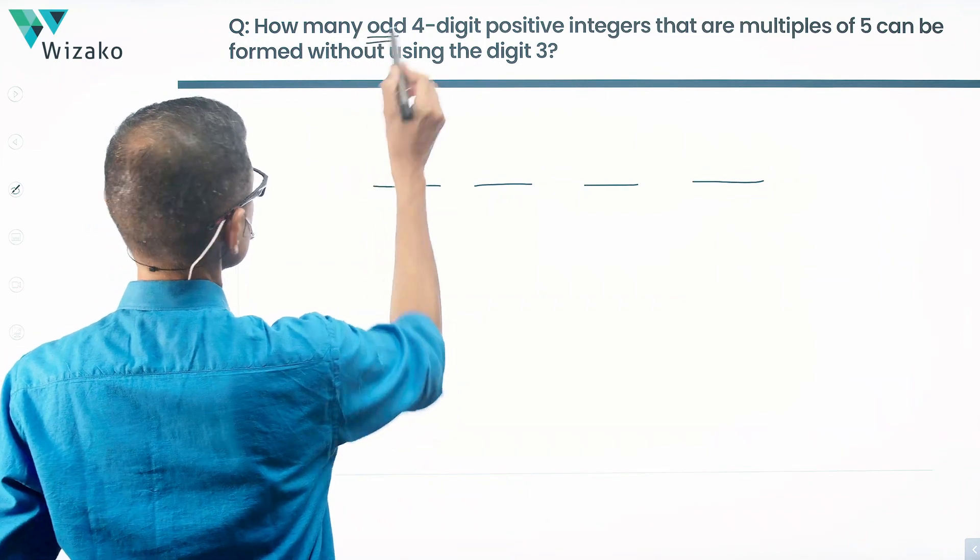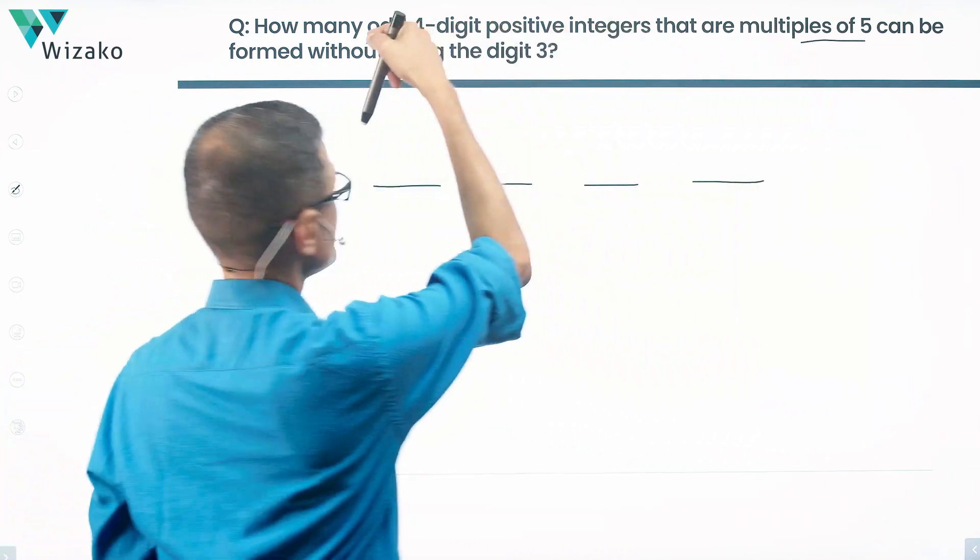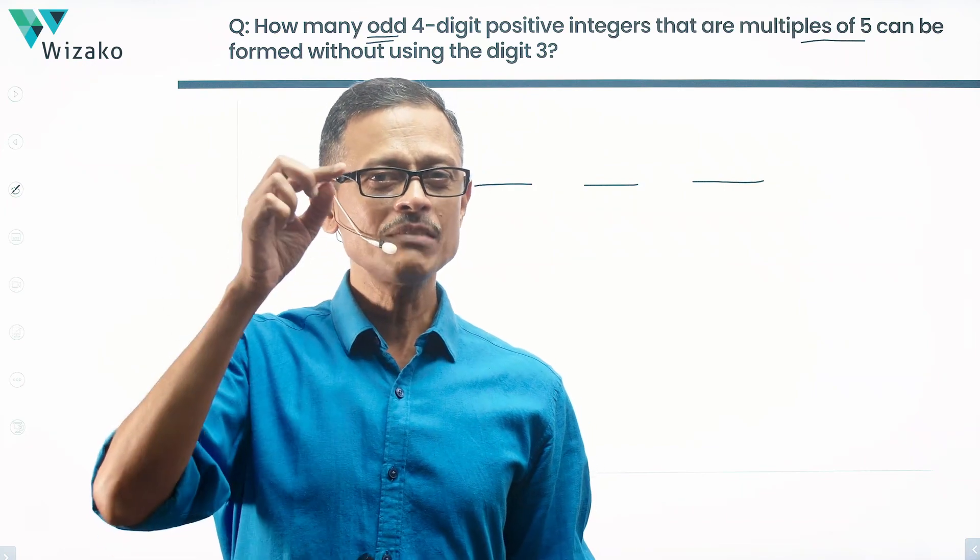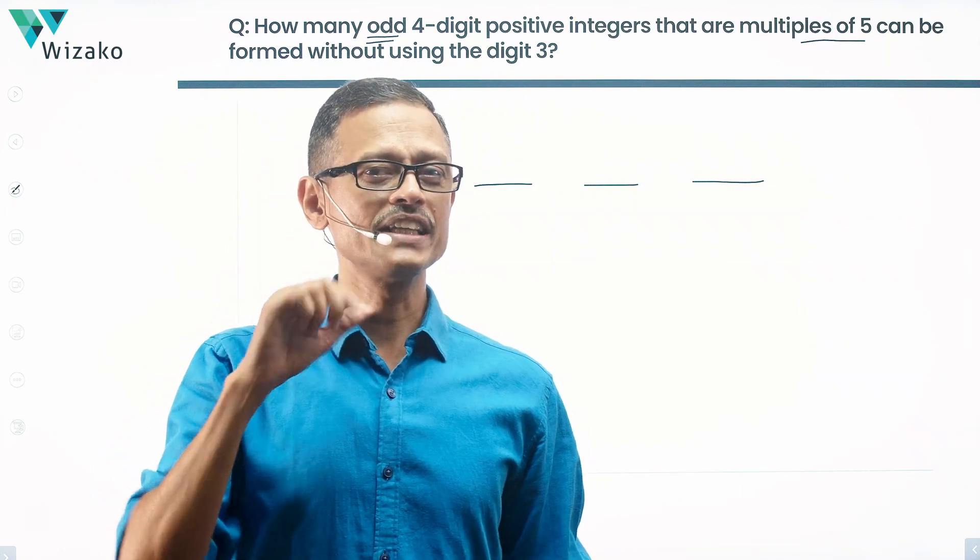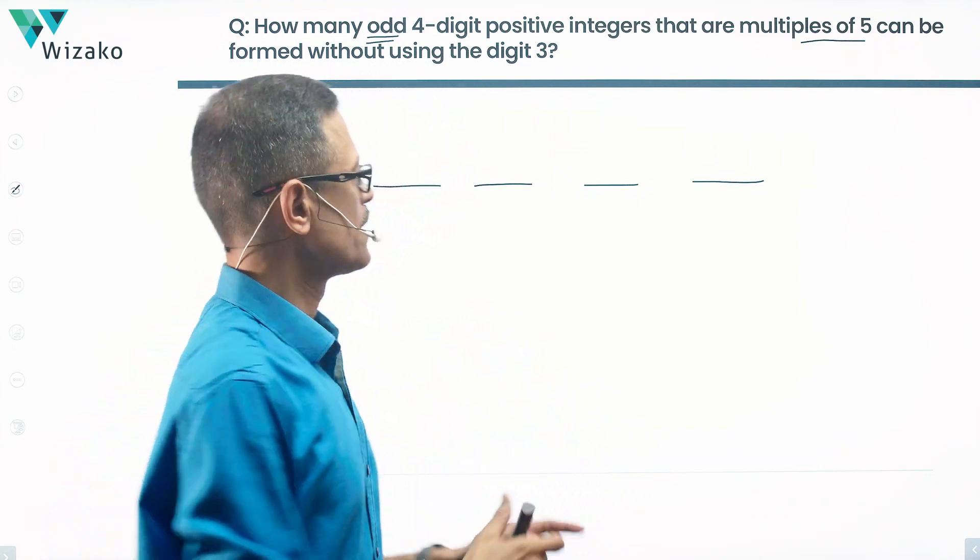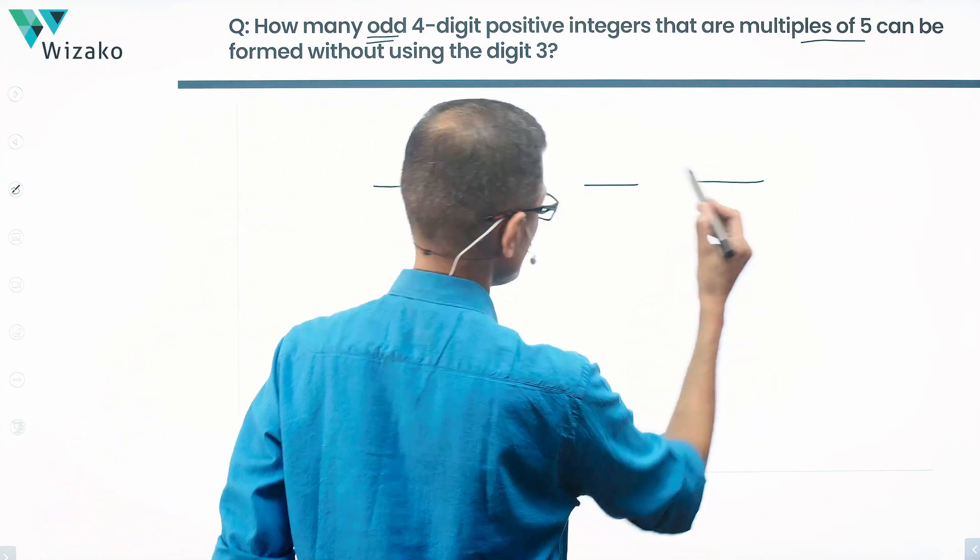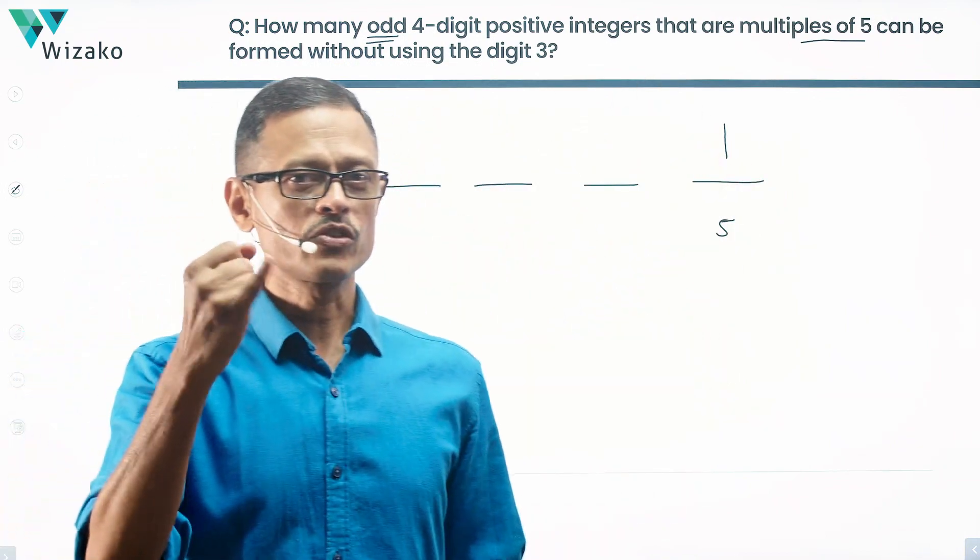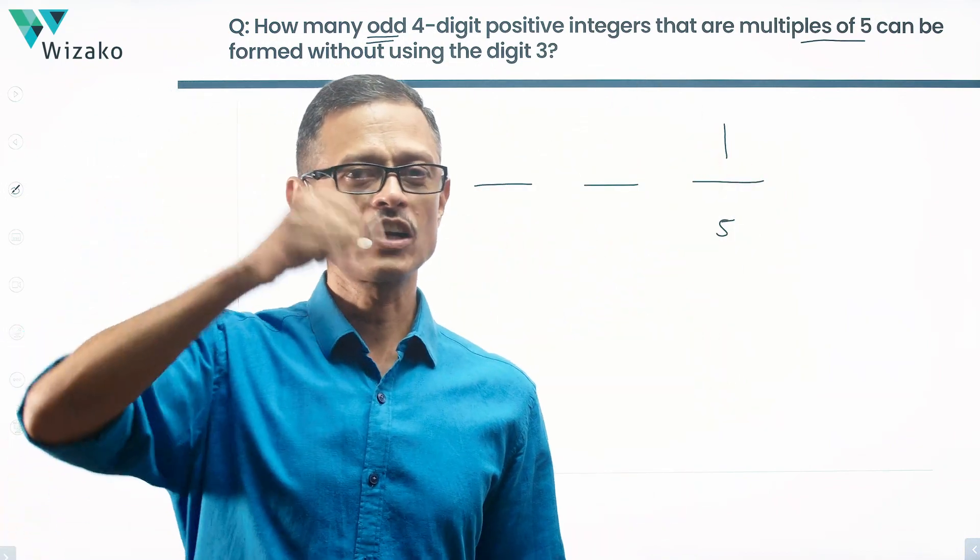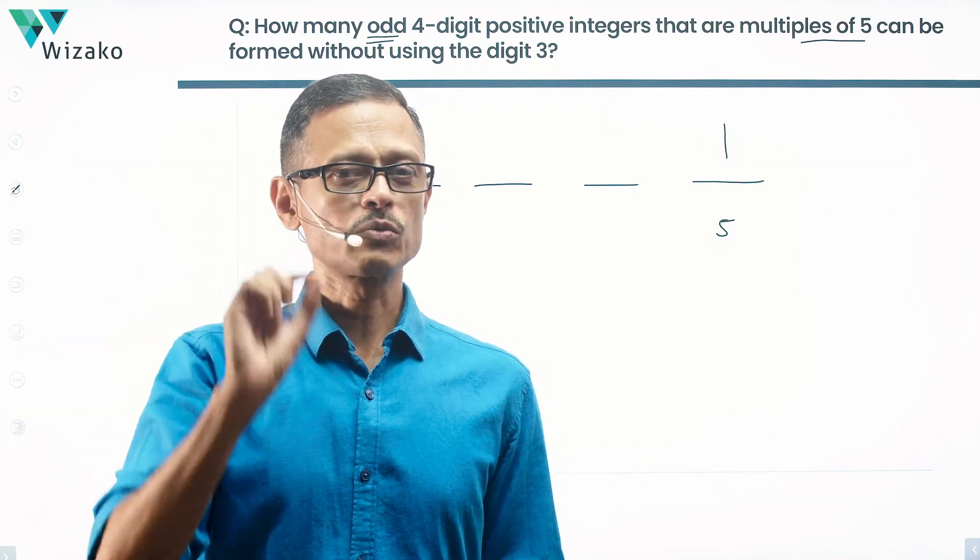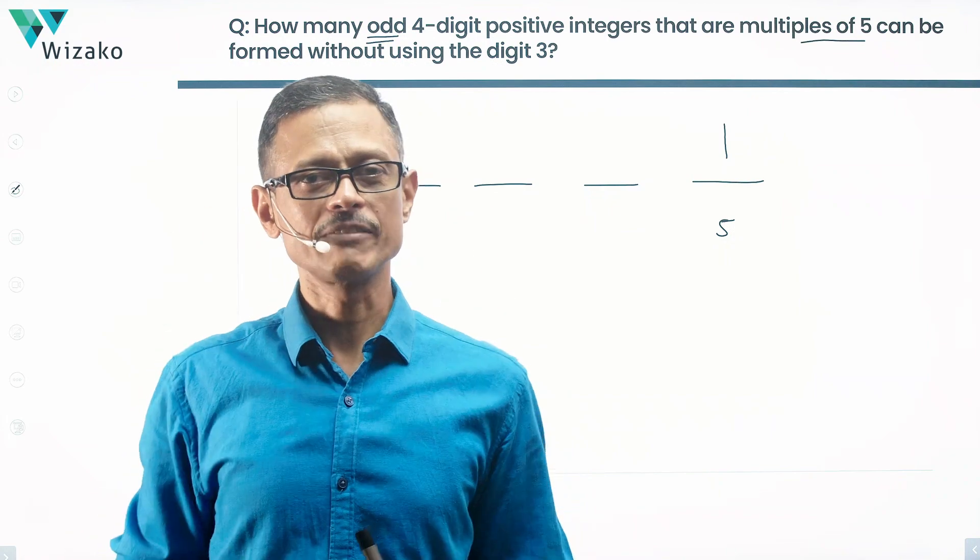It should be an odd number. It's a multiple of 5 and an odd number, which means you're talking about it being an odd multiple of 5. Any number that ends in 0 is going to be an even multiple of 5. So the unit digit can only be 5. It has to be a multiple of 5, so the unit digit has to be 0 or 5. It has to be an odd number, so the unit digit cannot be 0. It has to be 5, so unit digit has got only one possibility.